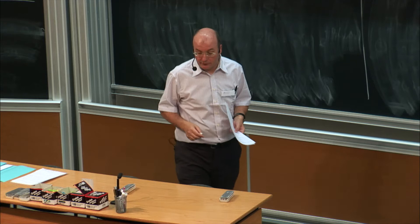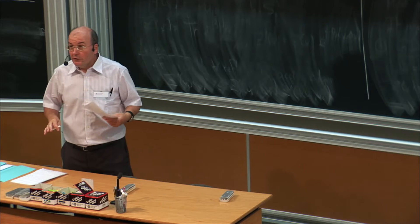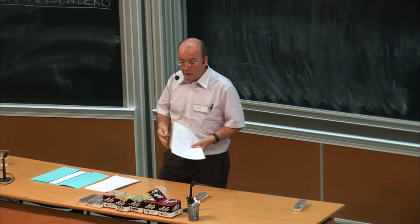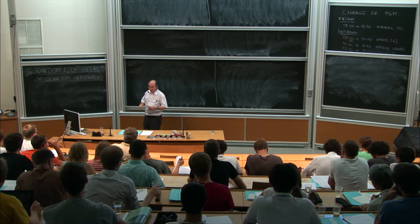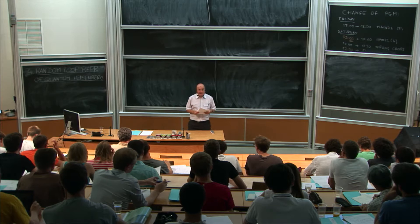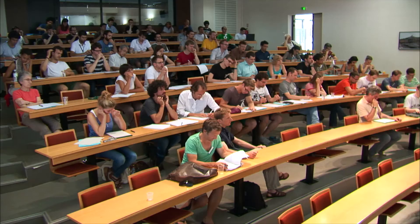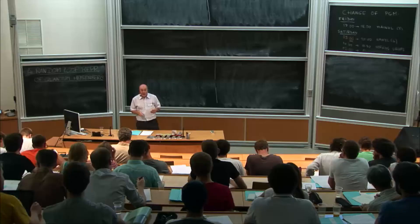This is the last lecture. I'd like to discuss random-loop representations for the quantum Heisenberg model. What we have seen in the first three hours were basic, fundamental stuff. Now it's going to be a little bit more peculiar — definitely closer to my research and also to a recent research area. I find random-loop representations to be a fascinating topic and I hope you'll get a sense of this too.